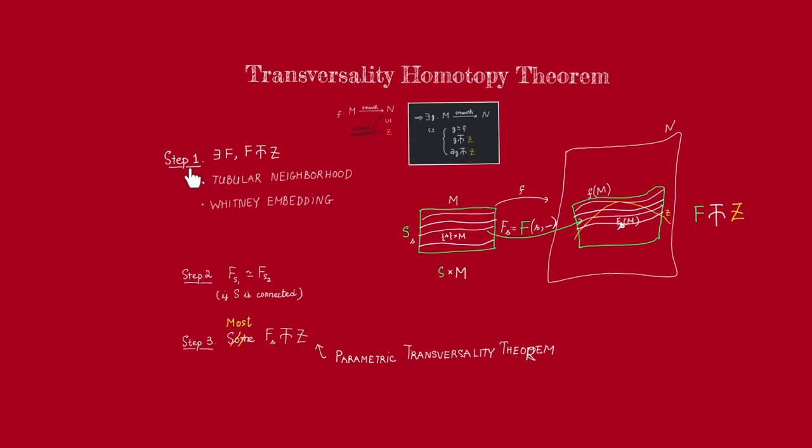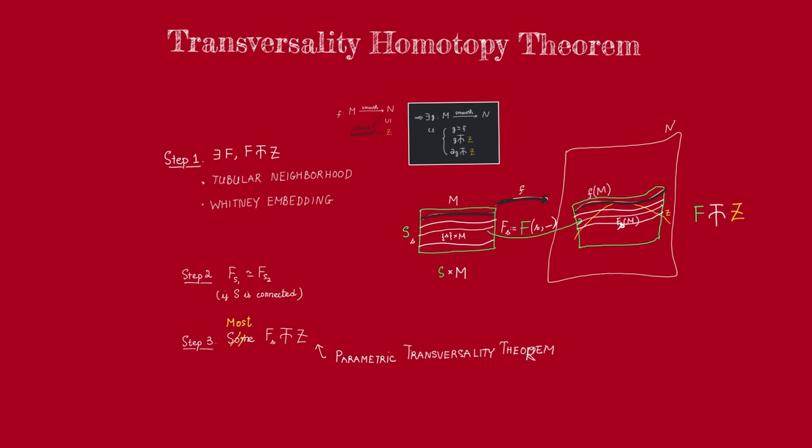Previously, we have done step 1 of the proof of the transversality homotopy theorem. That is, given a smooth map F from a manifold M to a manifold N, we have extended it to a family. This family that we constructed is transversal to every submanifold of N.